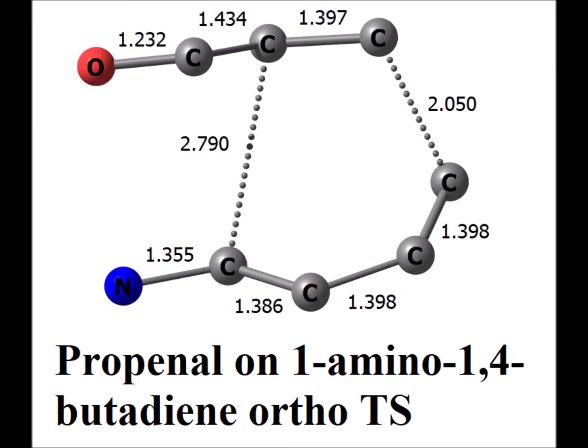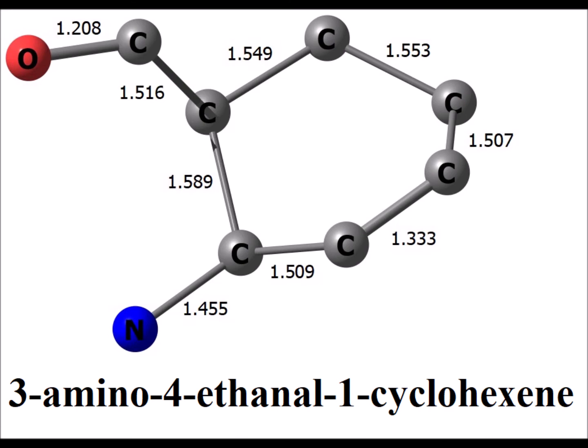Here is the computed transition state for the Diels-Alder reaction of propenal and the 1-amino-1,4-butadiene, oriented in such a way as to give an ortho arrangement of the substituents when the final ring is formed. Here we have the optimized structure of the product, more clearly showing that the amino and the ethanal substituents are ortho to each other within a cyclohexene ring.